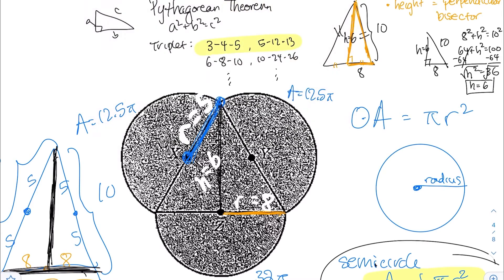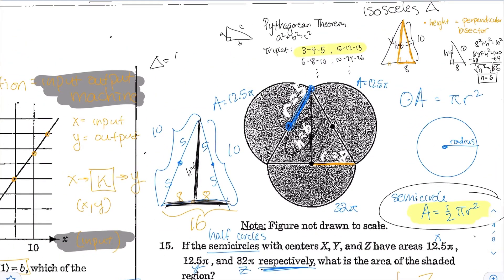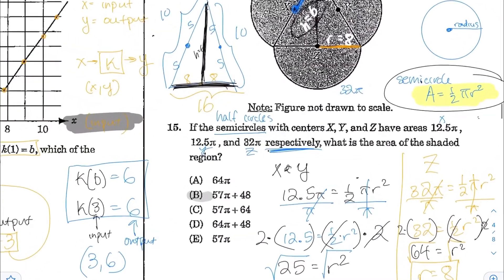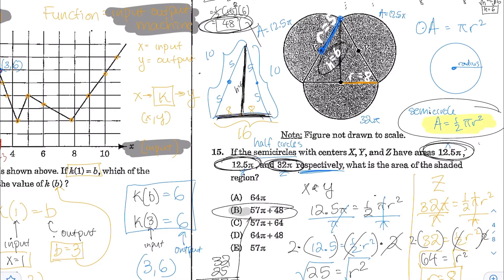With height 6 and base 16, the area of the triangle is (1/2) times 16 times 6, which equals 8 times 6, which is 48. Adding everything together: 12.5π plus 12.5π plus 32π equals 57π, plus the triangle area of 48. The answer is choice B: 57π plus 48.